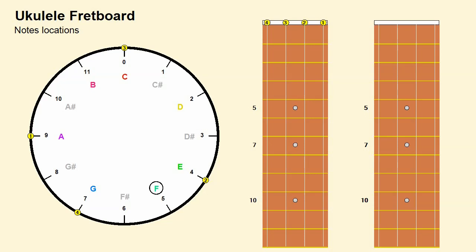To do this, we mark the note F on the face of the clock, then measure the intervals from the notes corresponding to the open strings to this note. Starting with the fourth string: the note F corresponds to the hours 5 a.m. and 5 p.m. (17 military time), therefore it is 10 hours away from hour 7, corresponding to the note G of the open fourth string — so the note F is located at the 10th fret of the fourth string. Continuing with the third string: the note F is located 5 hours from zero hour, corresponding to the note C of the open third string — therefore it is located at the fifth fret of the third string.